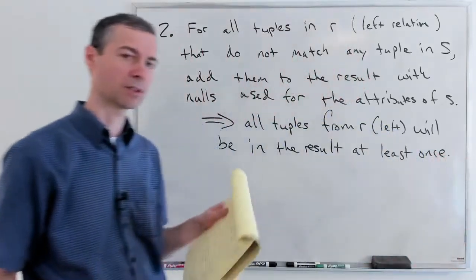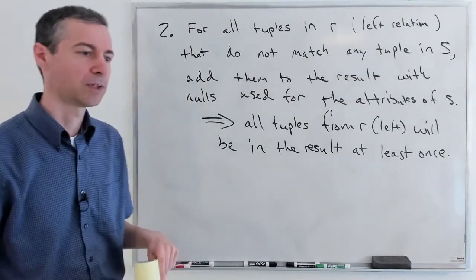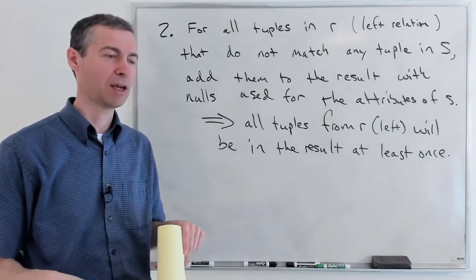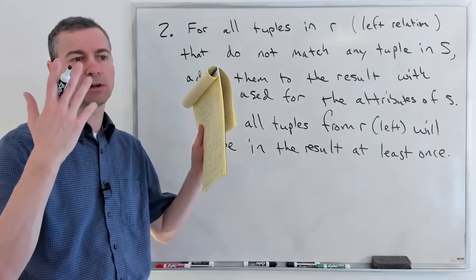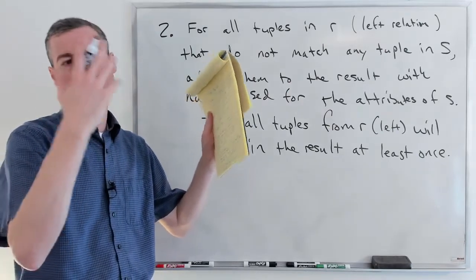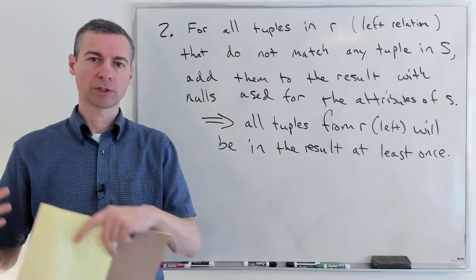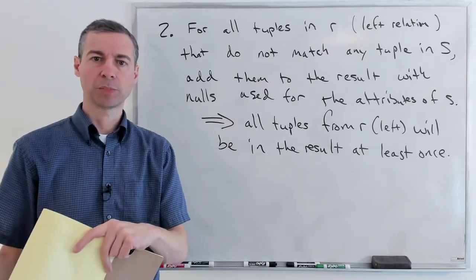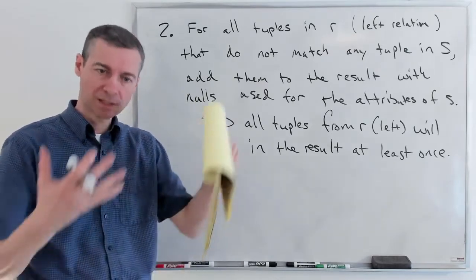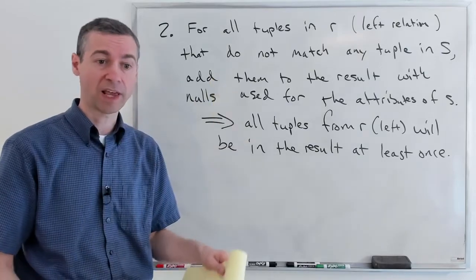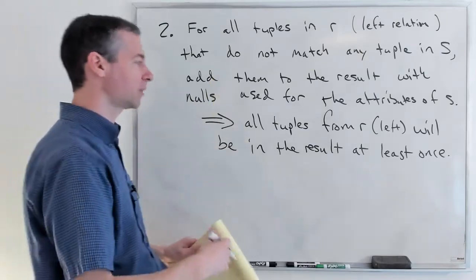The big thing to note is that no matter what, when you do a left outer join, all the tuples from R — the left relation — will be in the result at least once. This is handy when you want to see all of your users and join them with something else, but maybe they don't exist in the other table — you still want the list to have all the users in it, so you do a left outer join.